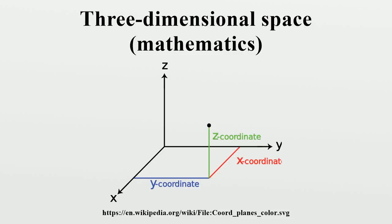Three-dimensional space is a geometric three-parameter model of the physical universe in which all known matter exists. These three dimensions can be labeled by a combination of three chosen from the terms length, width, height, depth, and breadth.